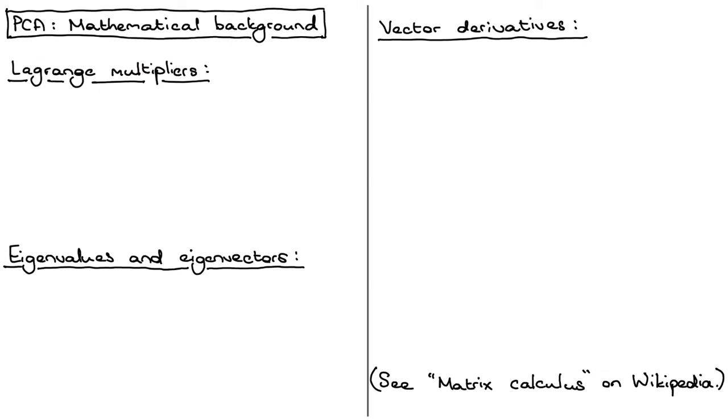The first concept is that of Lagrange multipliers, and this is something we use when we want to optimize a function but we have some specific constraints that we need to meet. For instance, we might want to optimize f(x) subject to some constraint g(x) equals zero. So we want to find the maximum or minimum of f(x) with respect to x, but there's some specific constraint that we put on the values that x can take on.